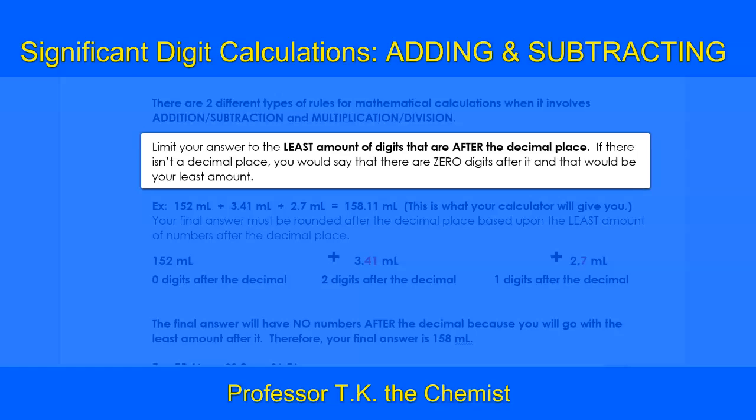The rule states that you must limit your answer to the least amount of digits that are after the decimal place. If there isn't a decimal place, you would say that there are zero digits after it and that would be your least amount.